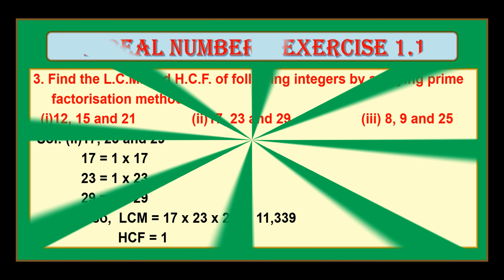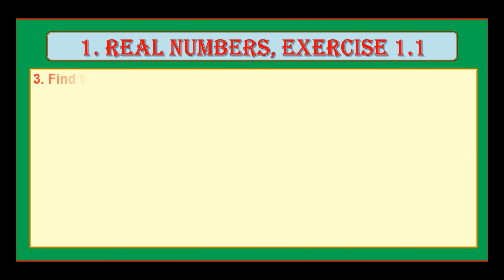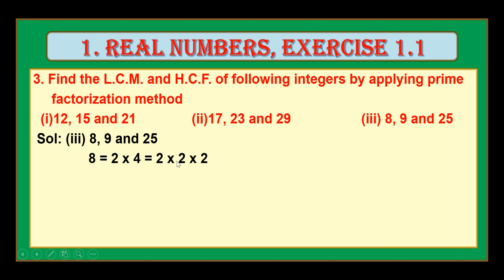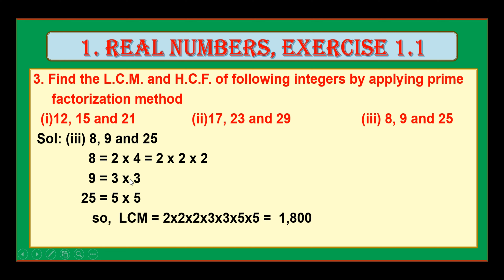Now let us solve the third bit: 8, 9 and 25. Let us prime factorize 8. You can write 8 as 2 into 4; since 4 is not a prime number, divide it further: 2 into 2. Therefore, 8 is 2 into 2 into 2. Next, 9 can be written as 3 into 3. And 25 can be written as 5 into 5. We have divided all three numbers into prime factors. LCM equals 2 cubed into 3 squared into 5 squared, which is 8 into 9 into 25 equals 1800. LCM of 8, 9 and 25 is 1800.